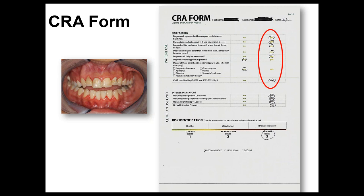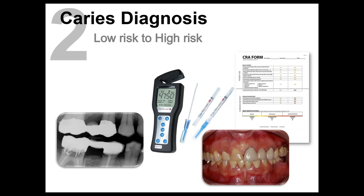Going through the risk assessment form: do you notice black buildup on your teeth? Are you taking medications? Do you feel like you have a dry mouth? This person is high risk — she has all the disease indicators and is a D0603 on the risk assessment form. The real point is: what's causing her disease? If we can figure that out, we can best help her. If we just do drill and fill without correcting the cause, in two or three years she'll be back with a mouthful of cavities again. How many times do we have to do that before we stop and realize that's a stupid approach?